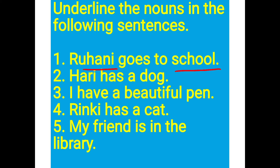Next sentence: Hari has a dog. Hari is the name of a person, so it is a noun. 'Has' and 'a' are not nouns. Dog is the name of an animal, so dog is a noun.